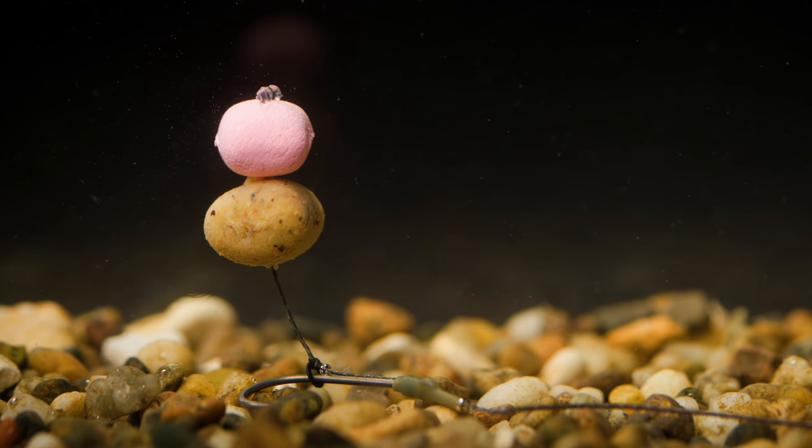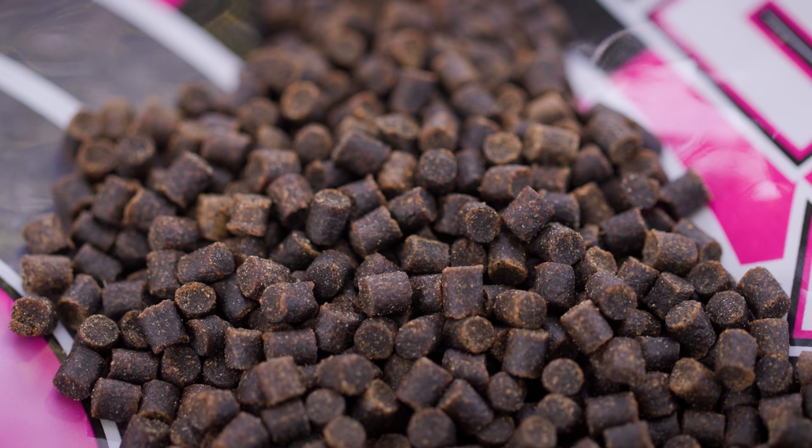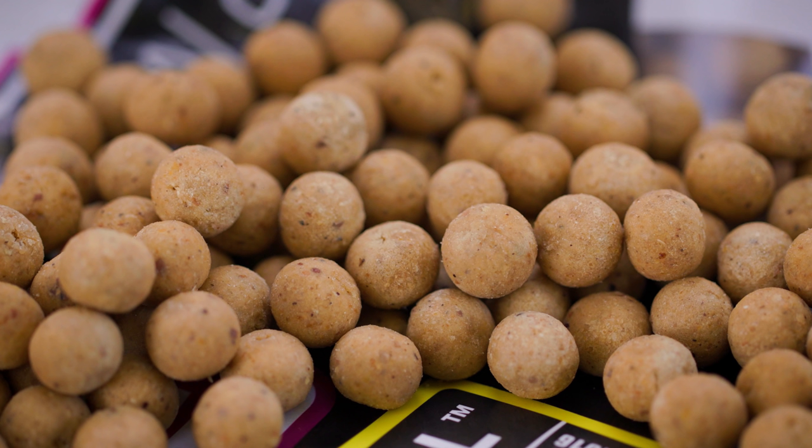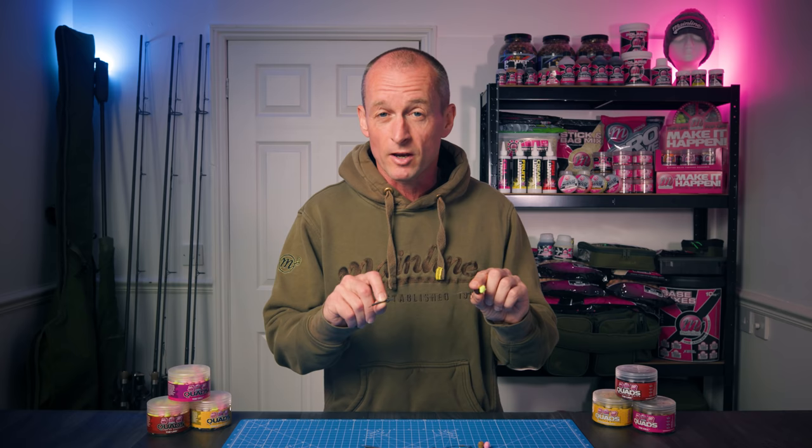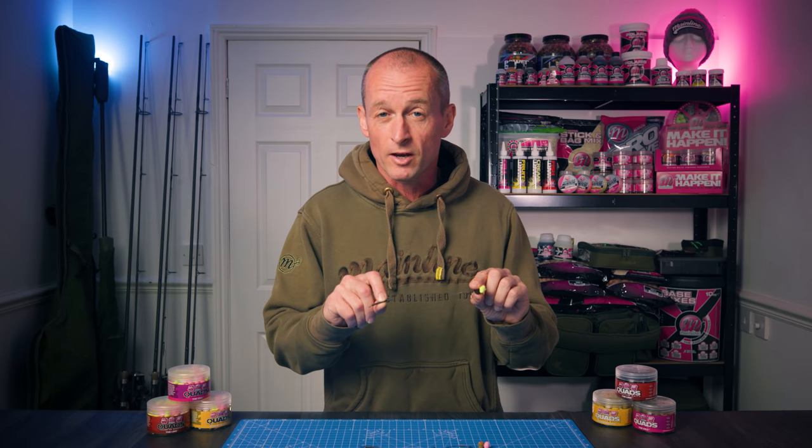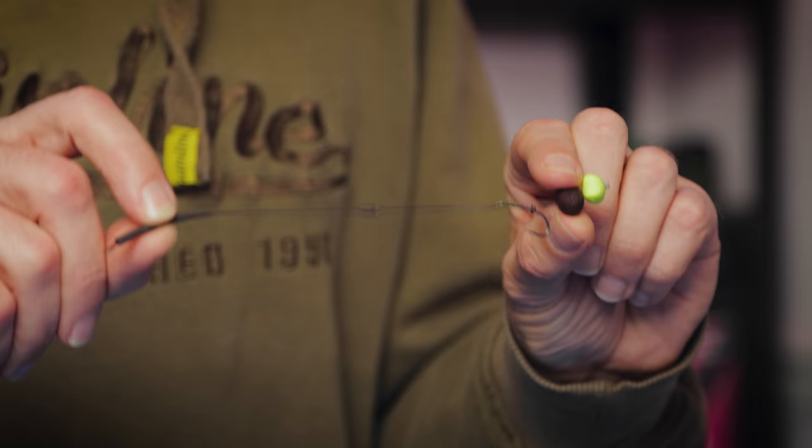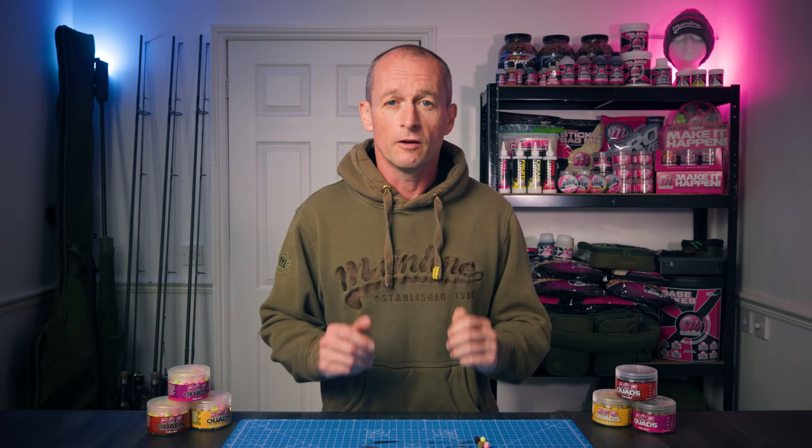This is going to work perfectly with some really popular ways of fishing boilies like crushing them up, 10 mils, mixed size boilies, a bit of pellet, because you've just got a couple of little hook baits there just nestled in amongst that feed. They resemble that really well.